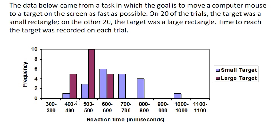The lighter blue here represents the times for the small target, and the darker reddish-purple color shows the times for the large target. We can start analyzing the behaviors using a graph like this. For example, we can tell that the large target scores seem to be smaller on average, and they tend to be more clustered. Whereas the small target scores tend to appear more spread out.